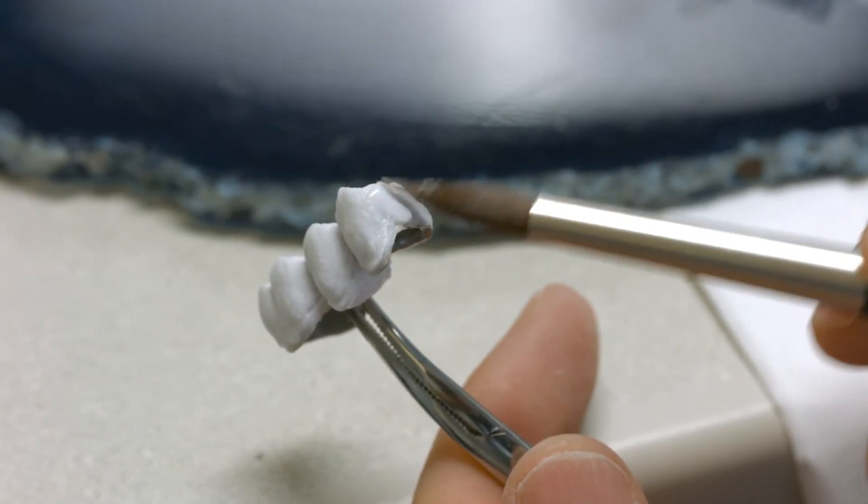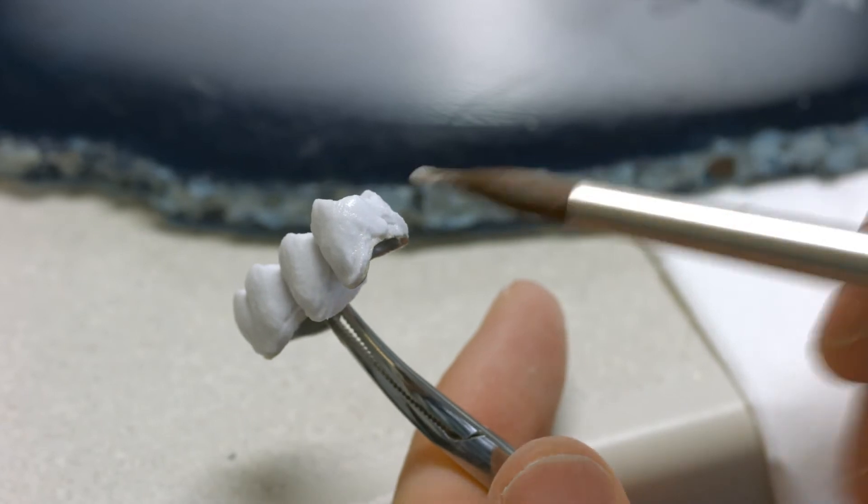Once the bridge has been removed from the model, you can apply the one-layer material to the contacts.